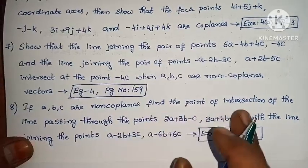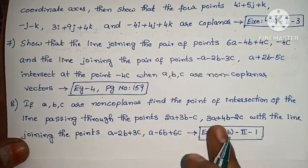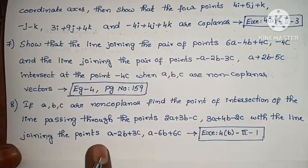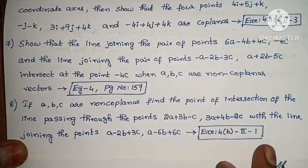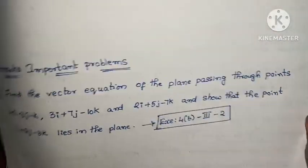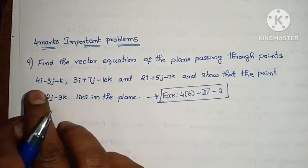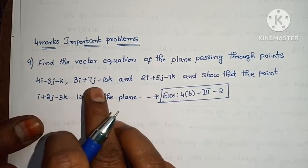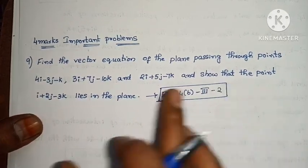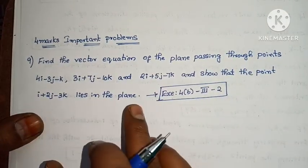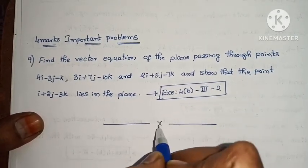Next: If A, B, C are non-coplanar, find the point of intersection of the line passing through the points 2A + 3B minus C, 3A + 4B minus 2C, with the line joining the points A minus 2B + 3C and A minus 6B + 6C. Exercise 4B, second exercise, problem 1. Next: Find the vector equation of the plane passing through the points 4I minus 3J minus K, 3I + 7J minus 10K, and 2I + 5J minus 7K, and show that the point I + 2J minus 3K lies in the plane. Exercise 4B, third exercise, problem 2. That completes the 4-mark important problems.